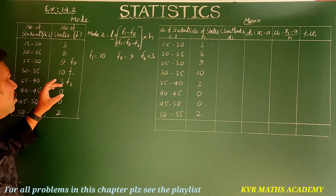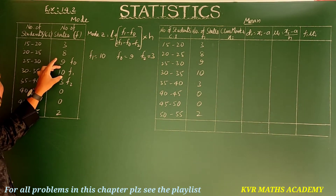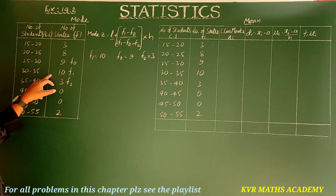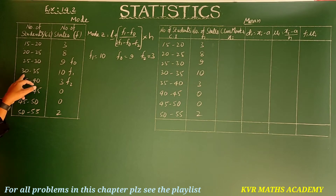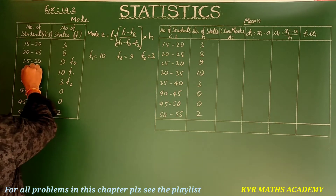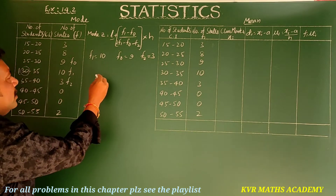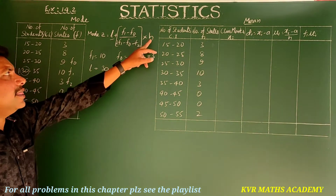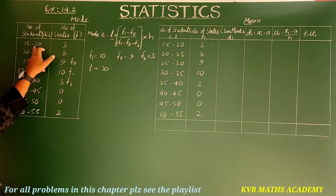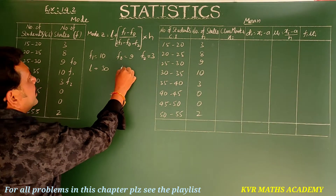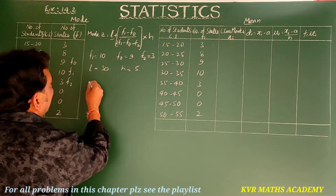l is the lower boundary of the modal class. The modal class is 30–35, so the lower boundary l = 30. h is the class size: 20 − 15 = 5, so h = 5.